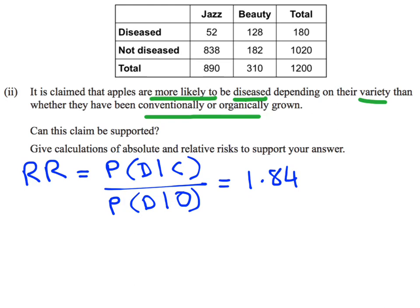Now we've got to look and do a new calculation for the other part of this claim. So we can't compare it until we've got the other calculation, the other relative risk. Because they're using that word, more likely, and if you remember from my previous video, as soon as you see more likely, you need to think relative risk.